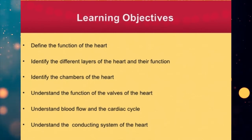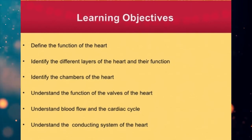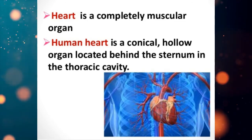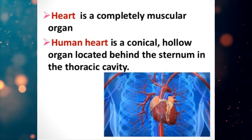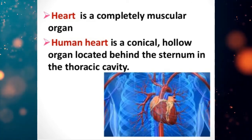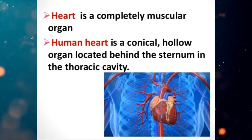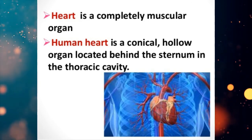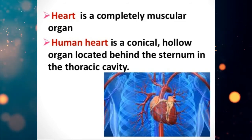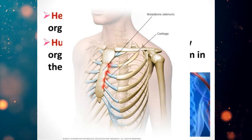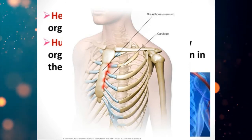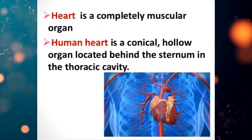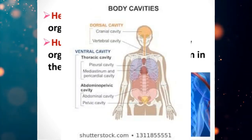Let us move on to the structure, size, and location of the heart. The heart is a completely muscular organ and a conical hollow structure located behind the sternum in the thoracic cavity. The sternum is the bone present on the front side of the rib cage where all the ribs are attached — it is also called the breast bone.